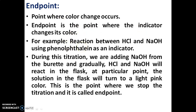For example, the reaction between HCl and NaOH using phenolphthalein as an indicator. During this titration, we are adding NaOH from the burette, and gradually HCl and NaOH will react in the flask. At a particular point, the solution in the flask will turn into a light pink color. This is the end point where we stop the titration.